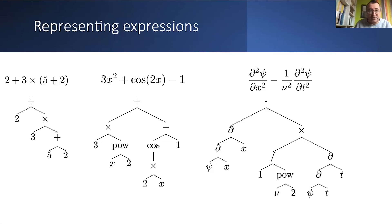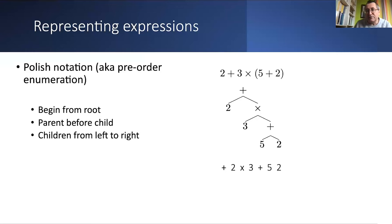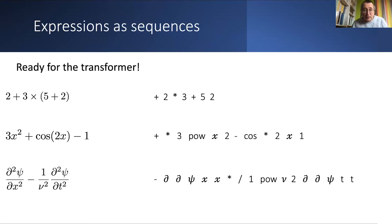Once you have a tree, it's very easy to enumerate it into a sequence. We typically use Polish notation: enumerate from the root, parent before child, left before right. So you start from the root — 'plus' — then left child '2', then right child starting from the root 'times 3', then 'plus 5, 2', and so on. This way you can encode pretty much any mathematical object into a sequence of tokens.